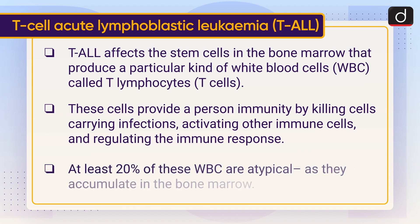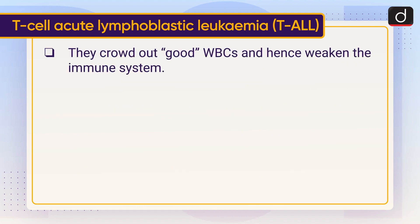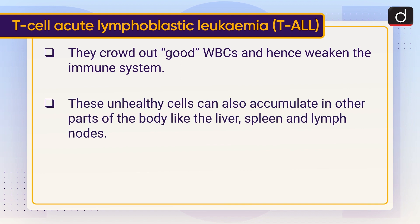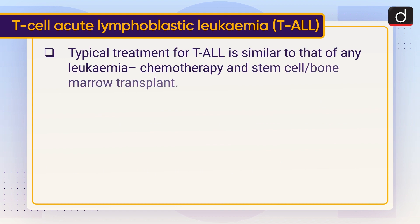In T-ALL, at least 20 percent of these WBCs are atypical. As they accumulate in the bone marrow, they crowd out healthy WBCs and weaken the immune system. These unhealthy cells can also accumulate in other parts of the body like the liver, spleen, and lymph nodes. While found in both children and adults, T-ALL's incidence decreases with age. Typical treatment is similar to other leukemias — chemotherapy and stem cell or bone marrow transplant.